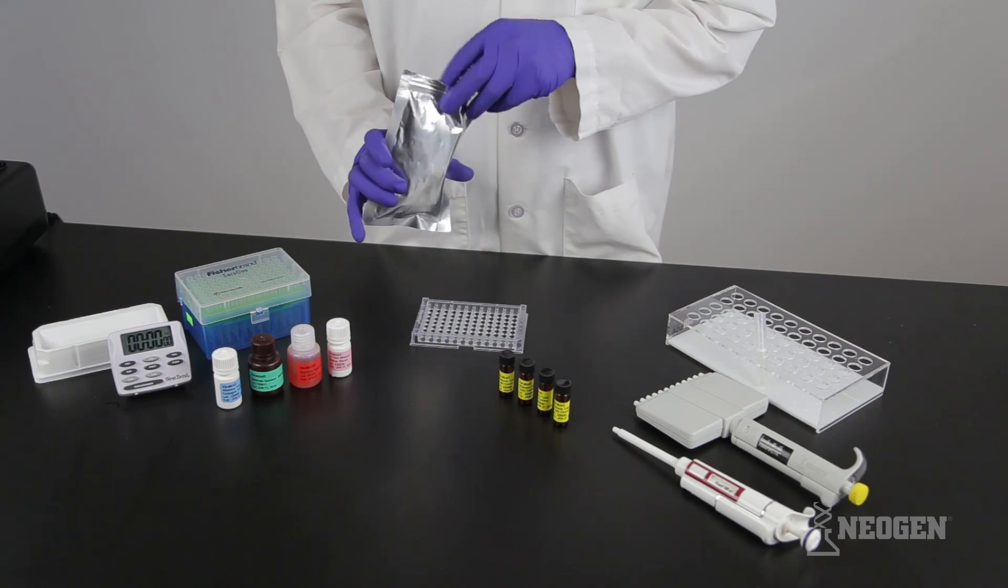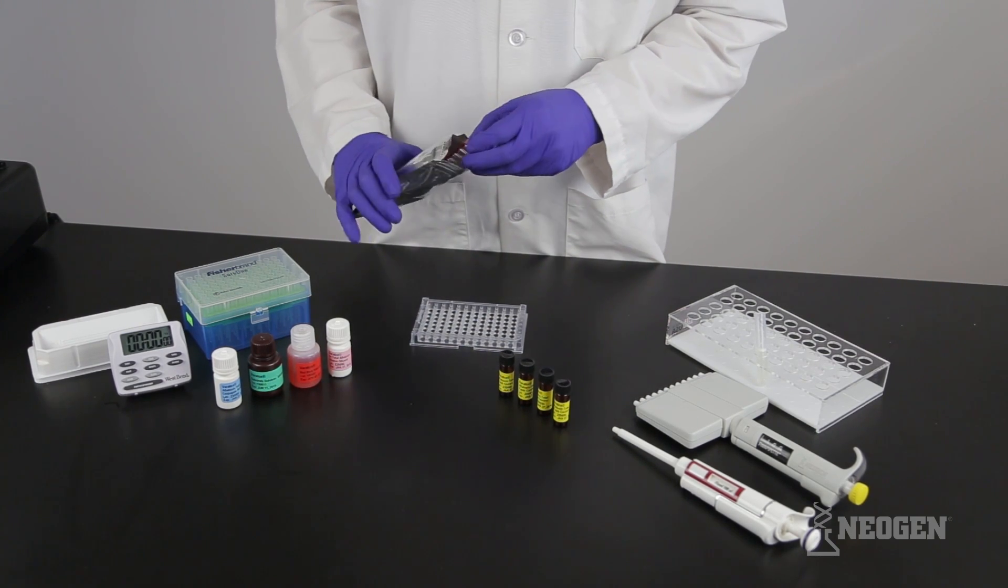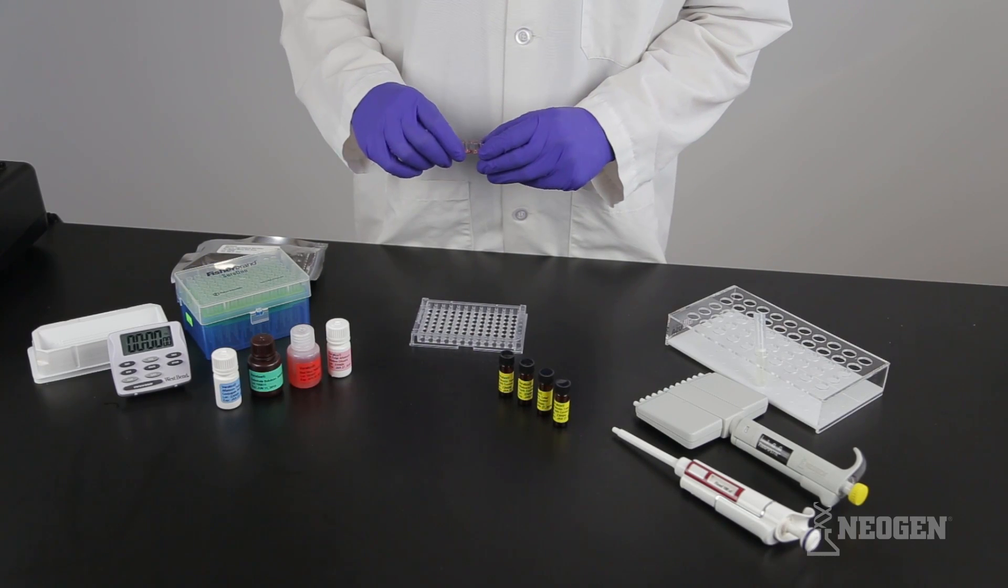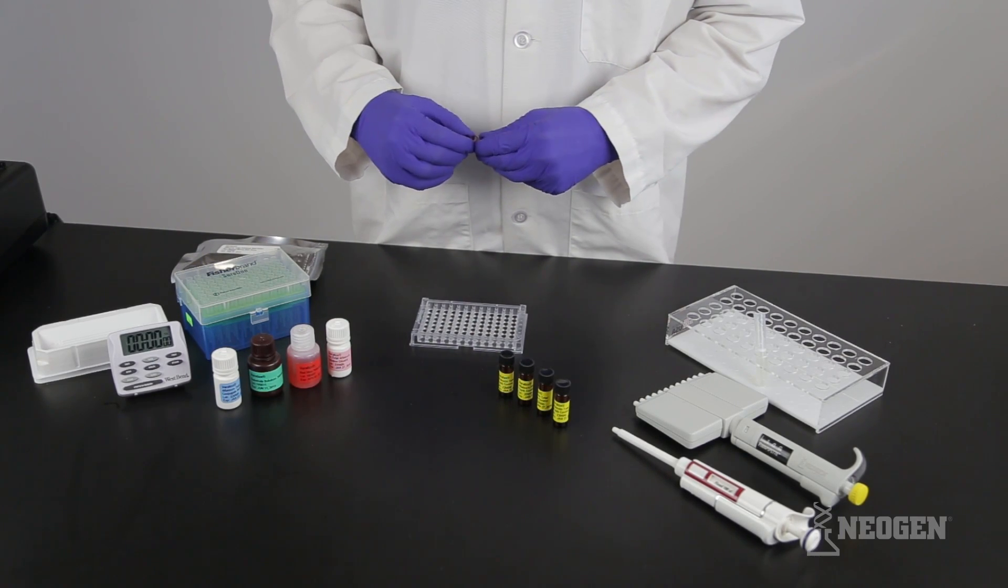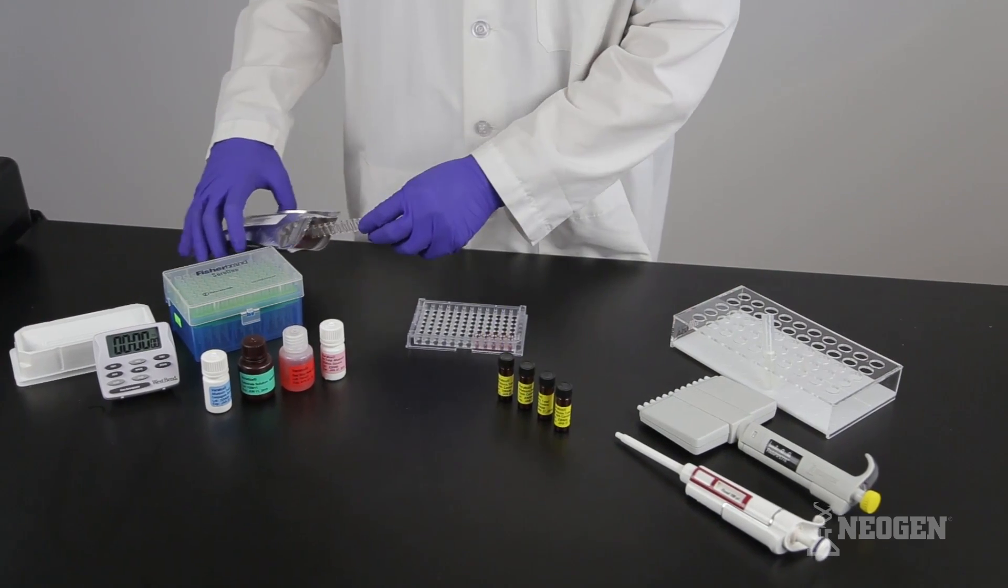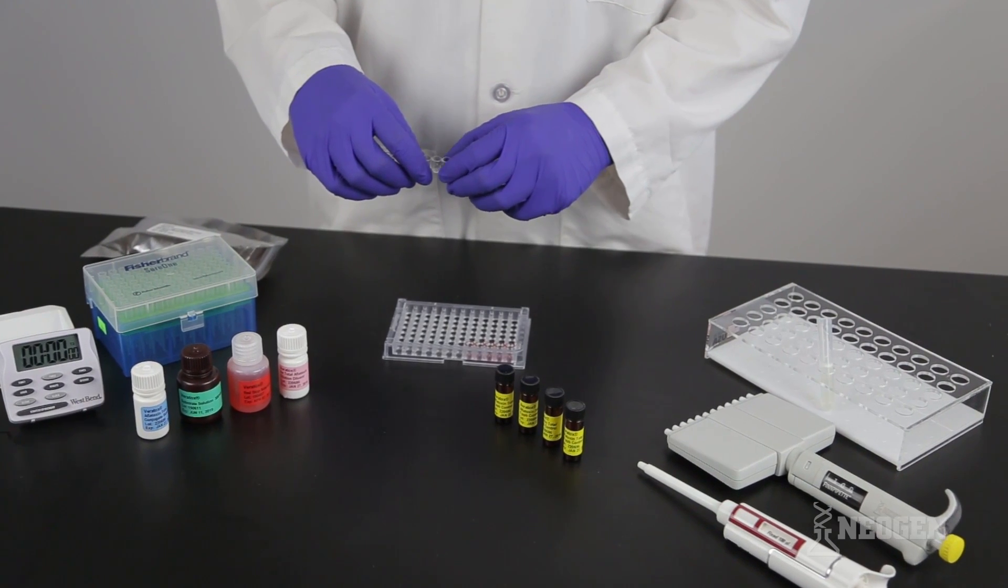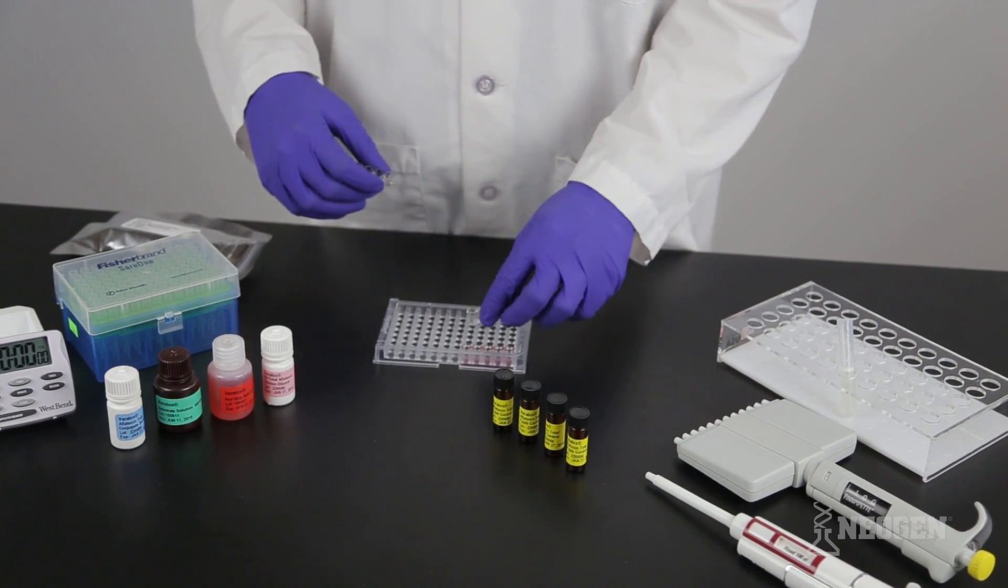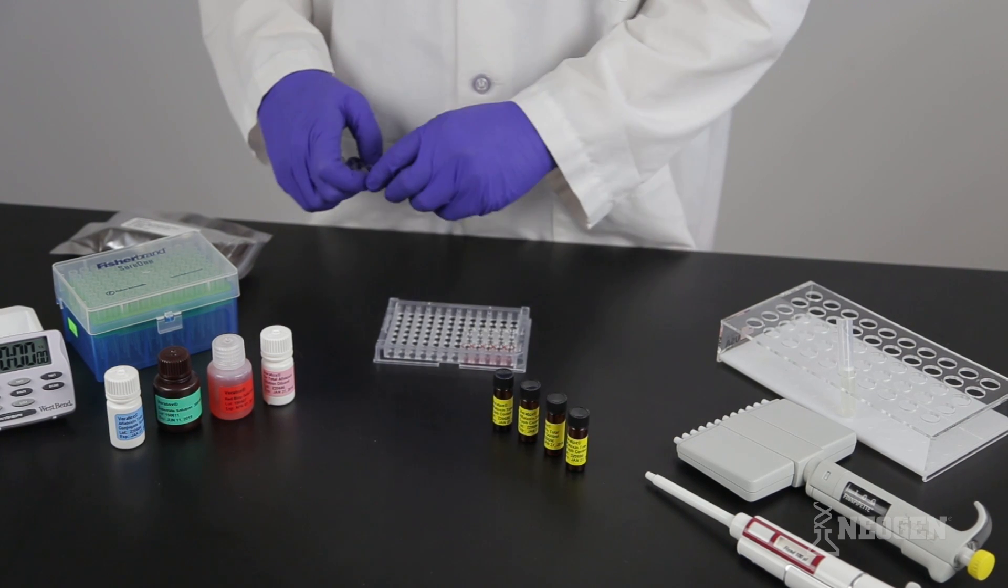To begin, make sure your kit is at room temperature. Remove one red marked mixing well for each sample to be tested, plus 4 red marked mixing wells for the controls. Place the microwells into the well holder. Remove an equal number of clear antibody coated wells, mark one end of the strip with a 1, and place the strip in a well holder with the marked end on the right.